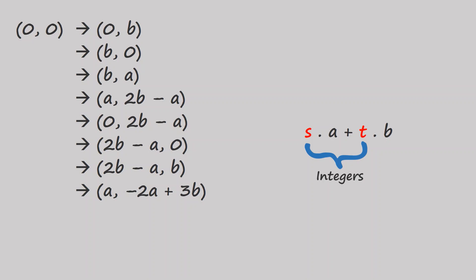This form actually has a name. It's called an integer linear combination of A and B. But I'll just call it a linear combination sometimes, because we're only dealing with integers.